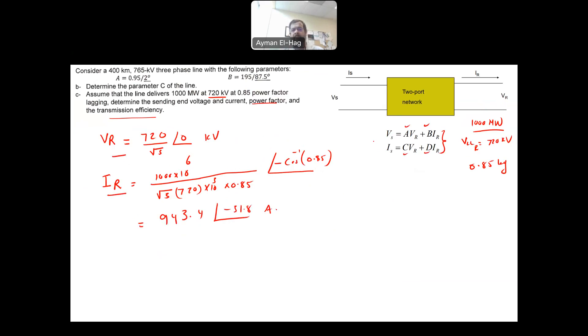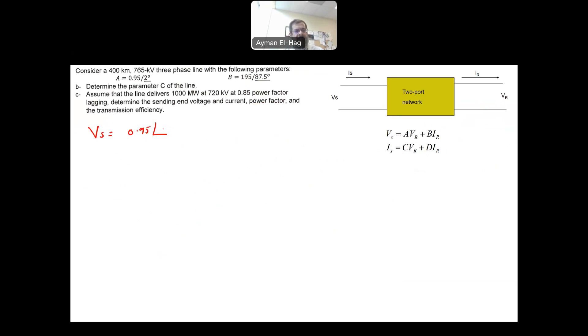We know A, B, C, D. Then we are ready to directly apply the formulas. So your VS is equal to A, which is 0.95 angle of 2 times your voltage, which is 720 times 10 to power 3 divided by root 3 angle of 0. Plus your B, 195 angle of 87.5 times your IR, which we already calculated 943.4 angle of minus 31.8. So this is basically your formula. We have everything here.